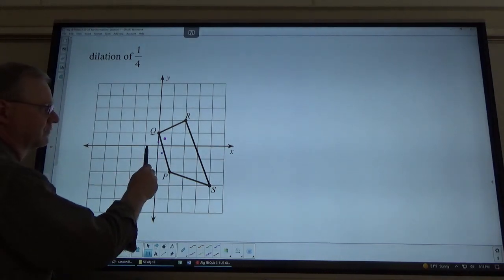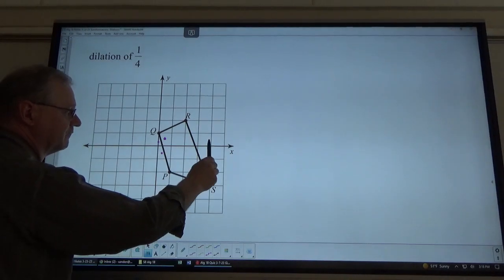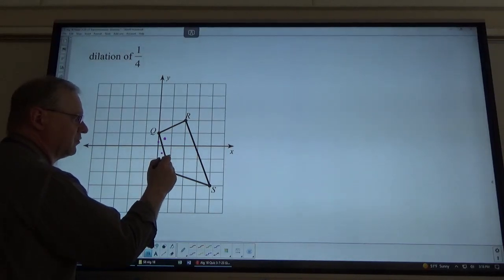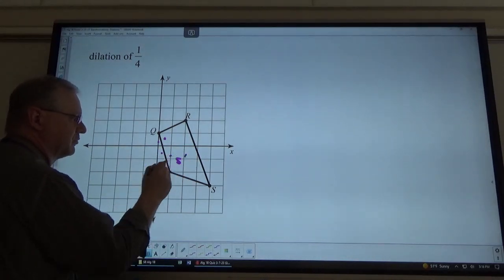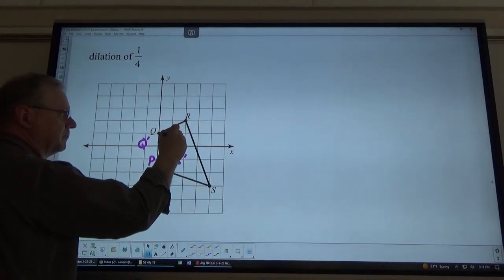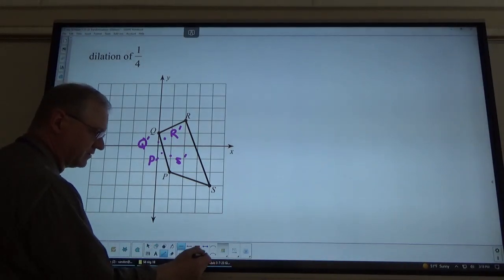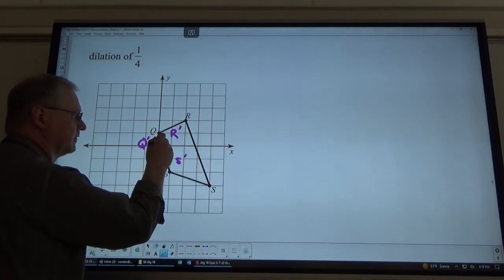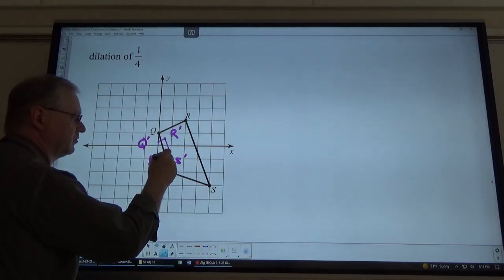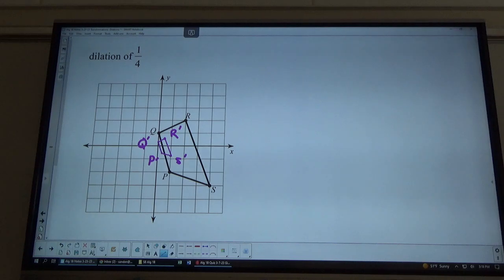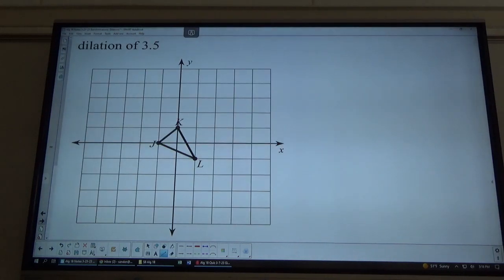And S is to the right 4 down 3. So, that's to write 1 down ¾. So, there would be S prime, P prime, Q prime, and R prime. Let me draw those out so that you can see that connection. Really small shape here because it's ¼ the size of the previous shape. Next, the last problem here. 3½.